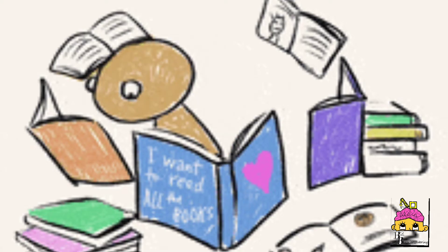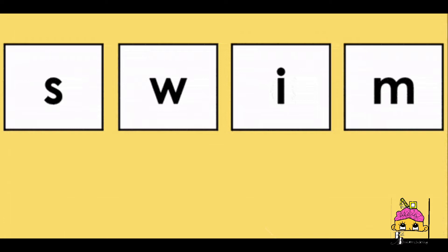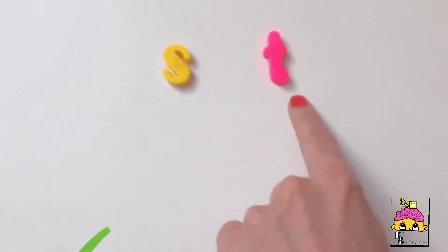As each new letter is introduced, your child will be able to read more words by just blending and sounding out the combinations made. Once they know they could sound out the word, they will then be able to read more words.